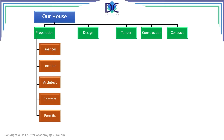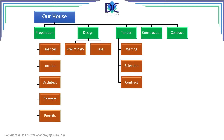For preparation, we can look at the financial situation, location, selection of architect, types of contracts, and permits that you need. For design, we can split it into the preliminary design and the final design. We have to write a tender, make a selection of the people who replied to the tender, and then following that, make a contract.